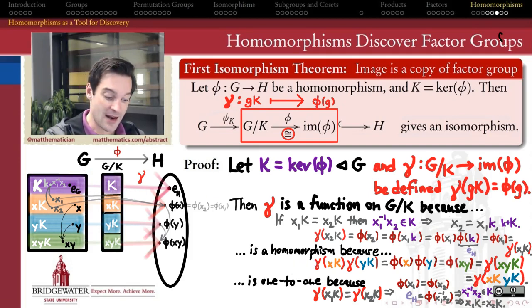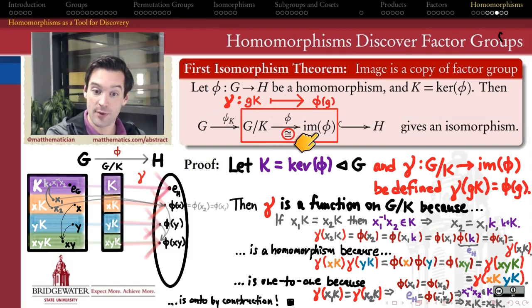It's a homomorphism, and it's also onto, and it's onto purely by our construction, because the target space here of this homomorphism is nothing more than the image of phi. And by definition, everything in the image of phi is getting hit. And therefore, this gamma is a well-defined function on the quotient G mod K. It satisfies the homomorphism property. It's one-to-one, and it's onto, and therefore, this gamma is the hidden isomorphism inside of the homomorphism from G to H. And that furnishes a proof of the first isomorphism theorem.